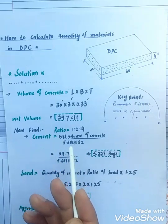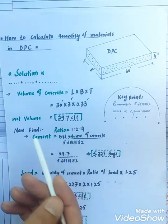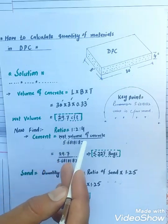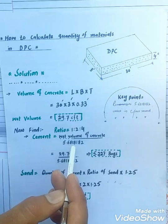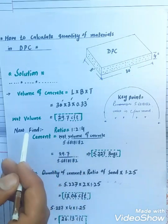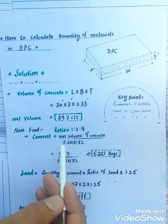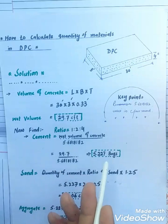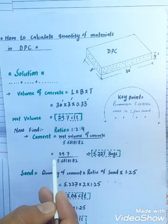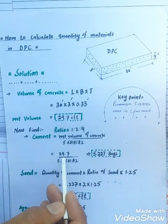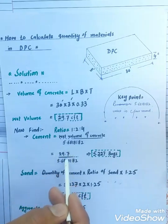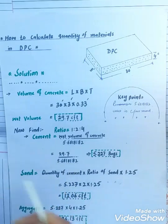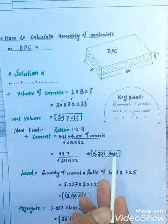Now find cement: wet volume of concrete divided by 5.4818182. This is the constant value, my dear viewers. I have learned with experience for finding the cement directly. Volume of concrete is 29.7, this is the wet volume of concrete, divided by 5.4818182. Cement needed is 5.427 bags.